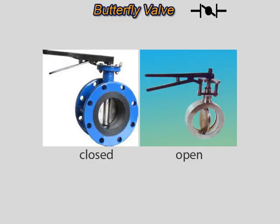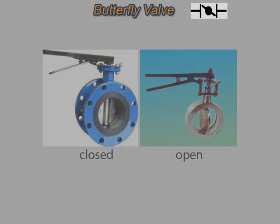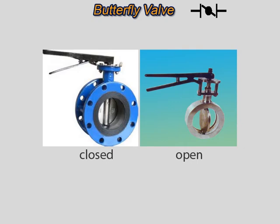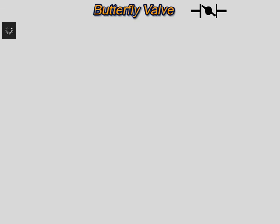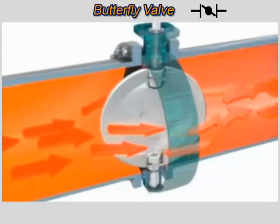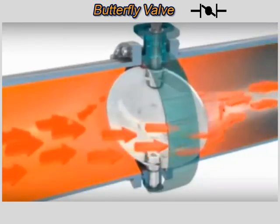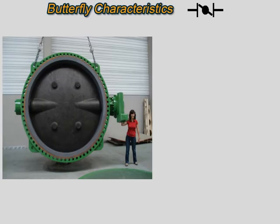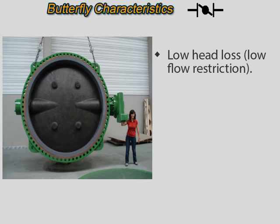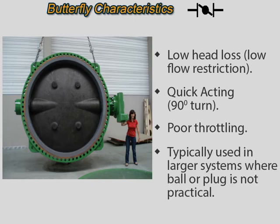A butterfly valve is a rotary motion valve that can be used to isolate flow. Butterfly valves are easily and quickly operated because a 90-degree rotation of the handle moves the disc from fully closed to fully open. Larger butterfly valves are actuated by handwheels connected to their stems through gears that provide mechanical advantage at the expense of speed. The main advantages are very little flow restriction when open and positive flow isolation with low torque. In smaller sizes, butterfly valves are also quick-acting — a quarter-turn on-off operation. Unlike ball valves and plug valves, butterfly valves can be designed in much larger sizes.